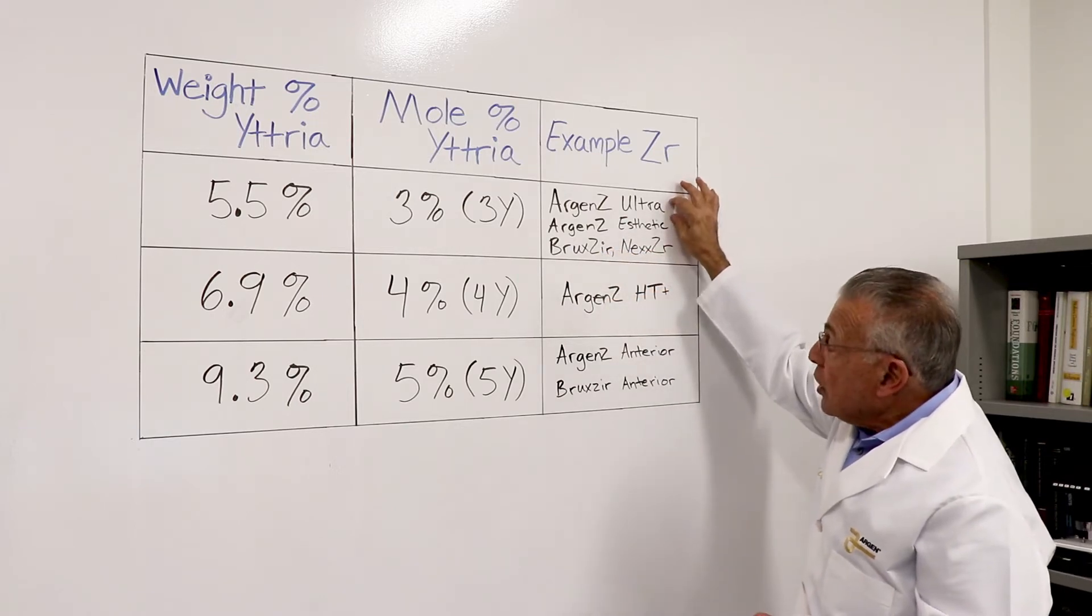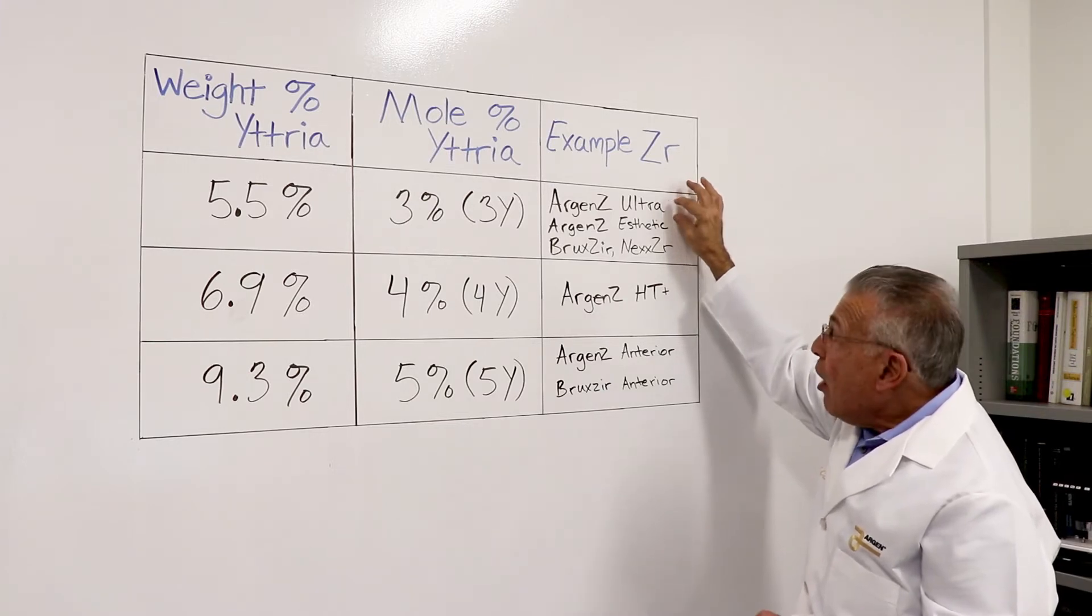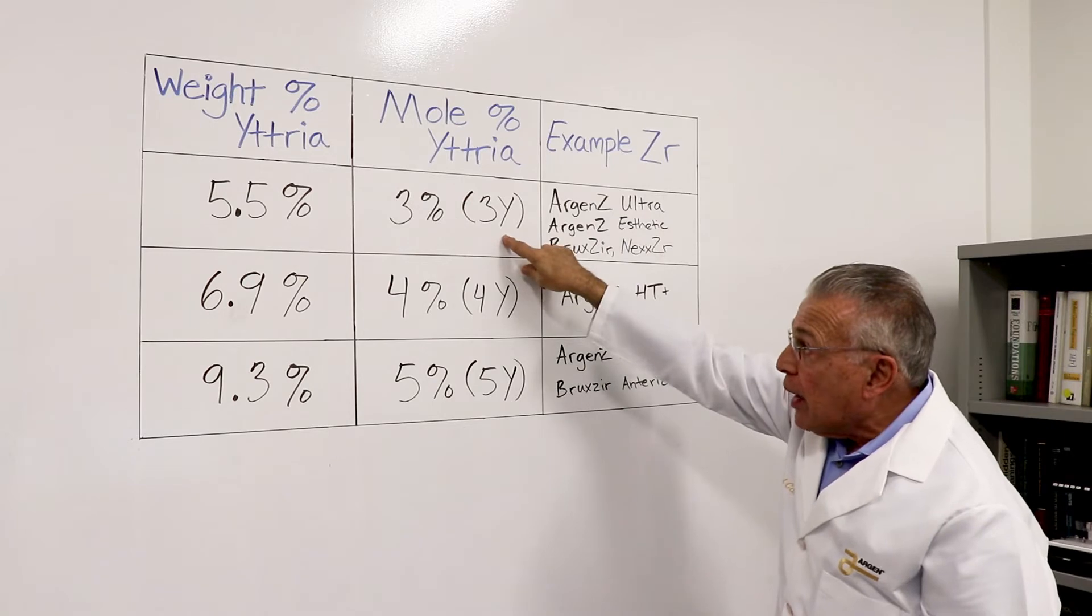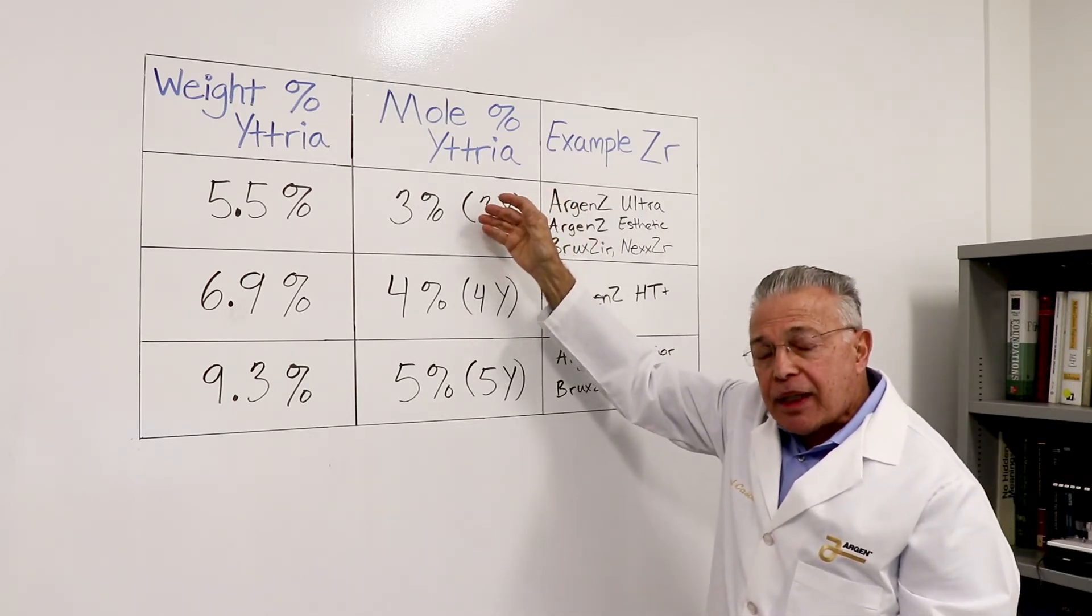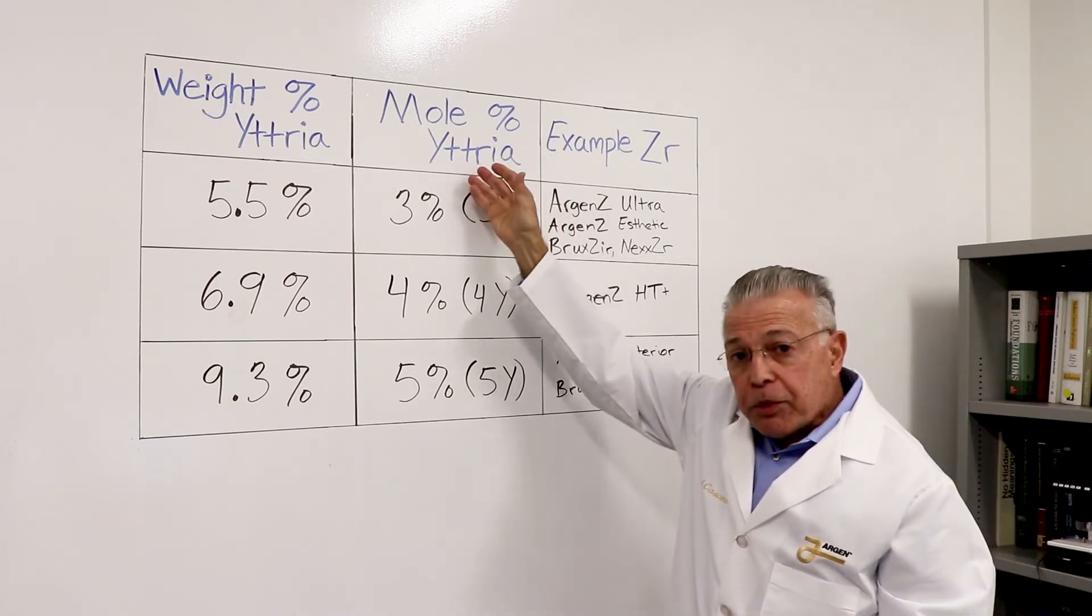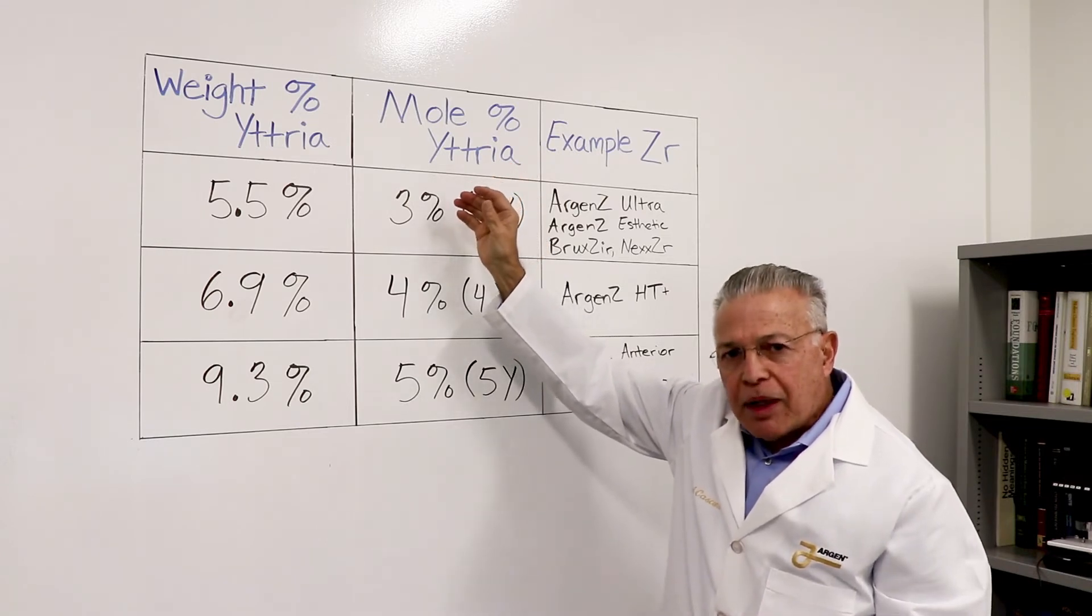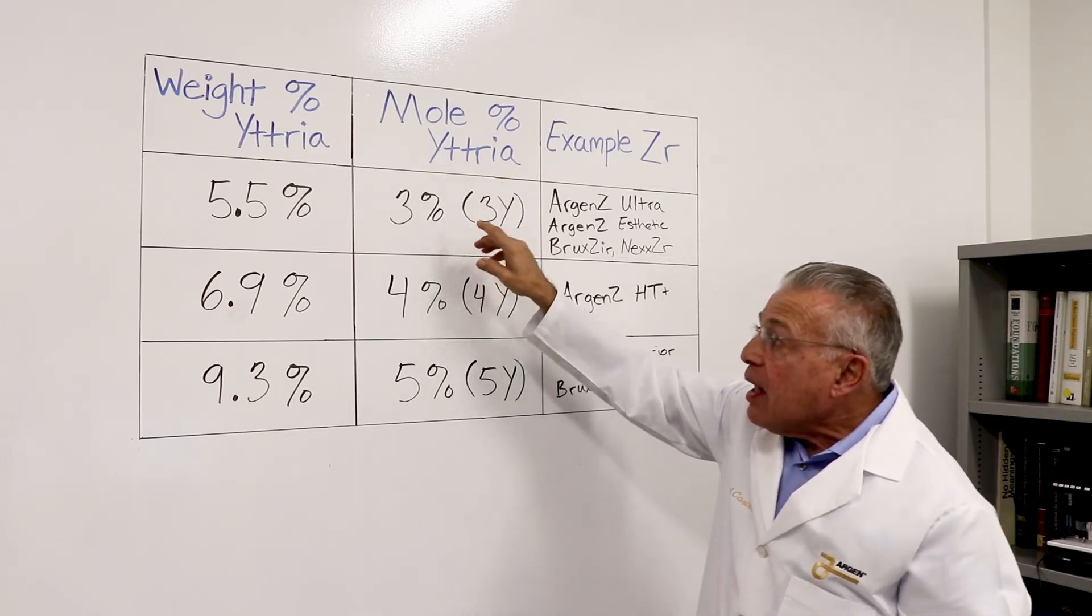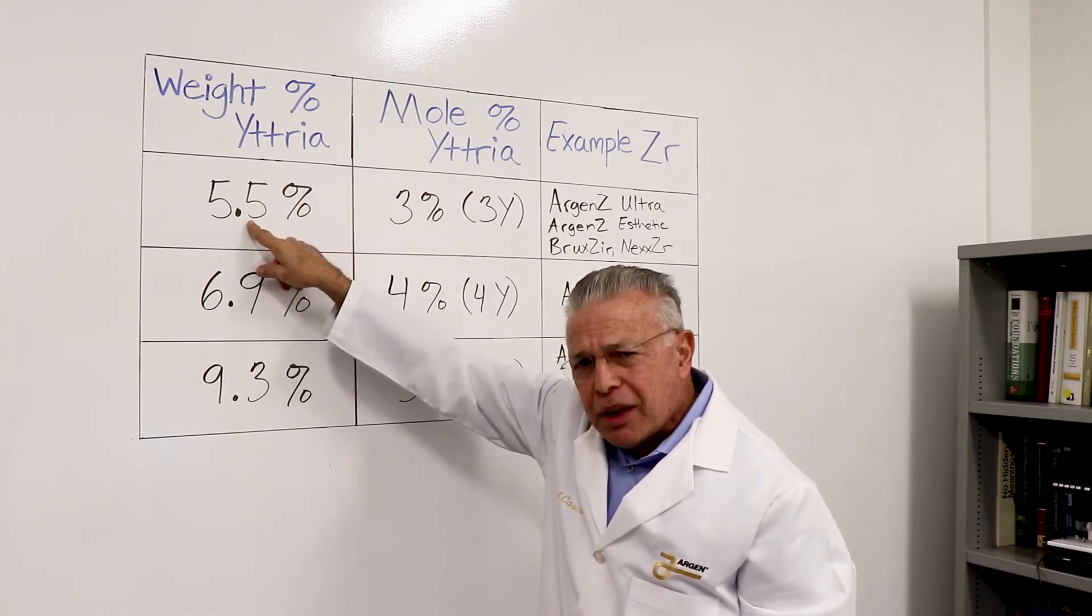The traditional zirconias, the high strength zirconias that are used for porcelain baking are all 3Y zirconia. The 3Y is just another way of expressing how much yttria is in the zirconia. 3Y is a three mole percent. Mole percent is an engineering term. Don't worry yourself about what that means except that the material has 5.5 percent yttria, about.